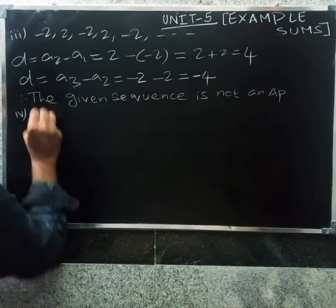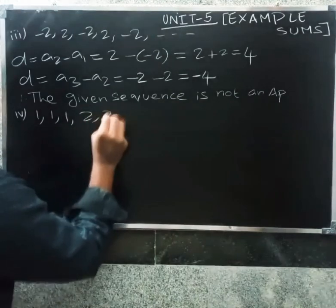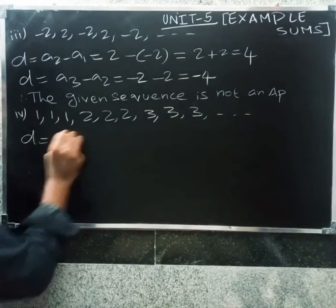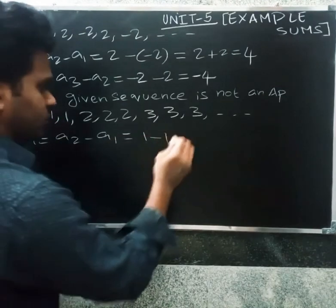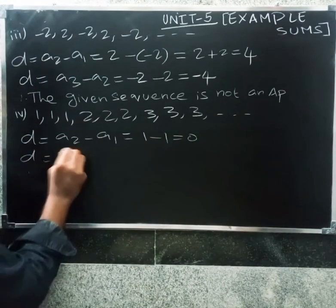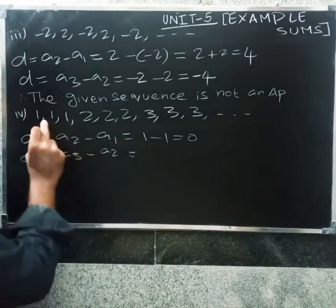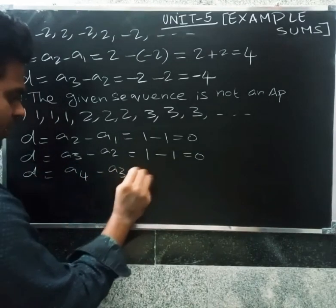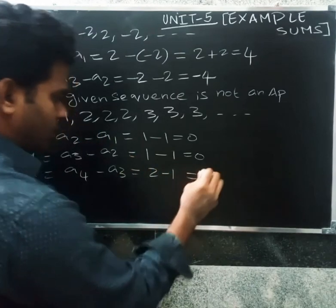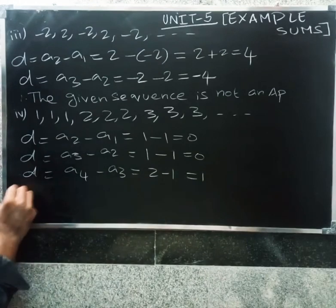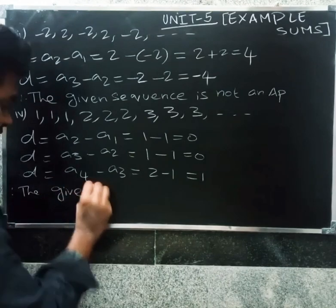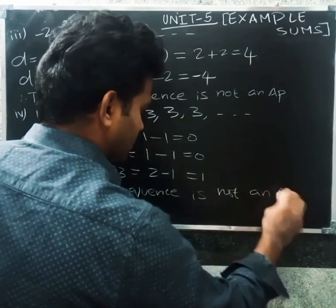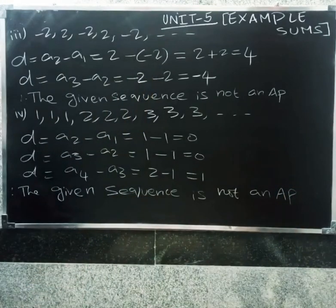Next, for the terminal sequence: 1, 1, 1, 1, 1, 2, 2, 3, 3. The difference A2 minus A1: one minus one equals zero. Again, A3 minus A2: one minus one equals zero. Next, A4 minus A3: one minus one equals zero, but then A2 minus one equals one — so the differences are not all equal. Therefore the given sequence is not an AP. Okay, thank you.